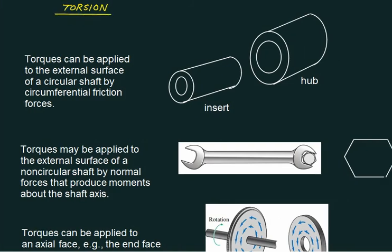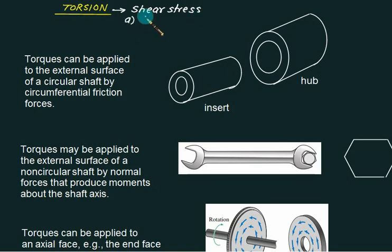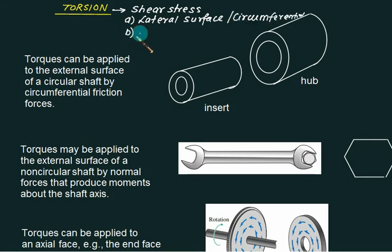Torsion of a shaft. How we can transfer the torsion — that is the torque — from one shaft to another shaft is always transferred by means of shear stress. Shear stress can occur in two ways: one on the lateral surface, that is the circumferential surface, and the second is on the cross-sectional area. Both are responsible for shear stress, and because of shear stress we can transfer the torque.